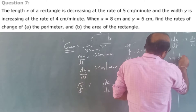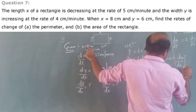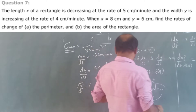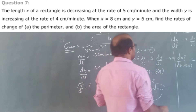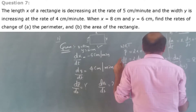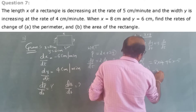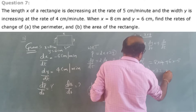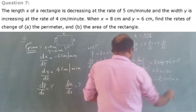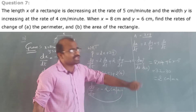Substituting x = 8, y = 6, dy/dt = 4, dx/dt = -5: dA/dt = 8(4) + 6(-5) = 32 - 30 = 2 cm per minute. So area is changing at 2 cm per minute, whereas perimeter is changing at minus 2 cm per minute.